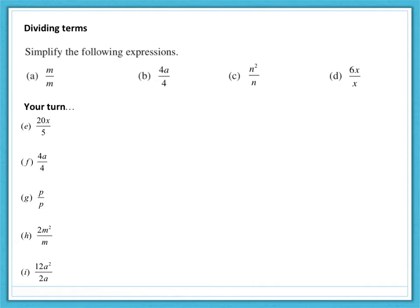So, we're now going to have a look at dividing terms, which is a little bit more complicated. So, let's think about part A here, the example A. M divided by M. You could think of it like 5 divided by 5, a number divided by itself. What's the answer? It's not 0, because it's not the number subtract itself, it's 1. So, M divided by M will equal 1.